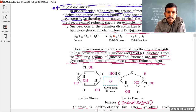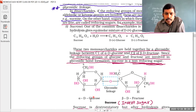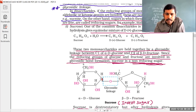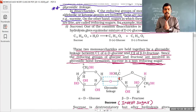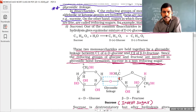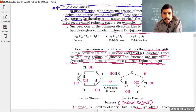Sucrose contains alpha-D-glucose and beta-D-fructose, with the C1 carbon of alpha-D-glucose glycosidically linked to the C2 carbon of beta-D-fructose. Even though anomeric forms are possible, there is no free aldehyde group (C1 is occupied) and no free ketone group (C2 is occupied). Therefore sucrose cannot reduce Tollens' reagent and Fehling's solution. Sucrose is a non-reducing disaccharide and cannot undergo mutarotation.